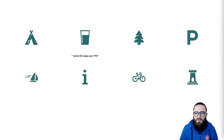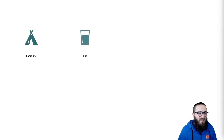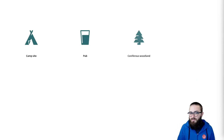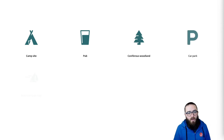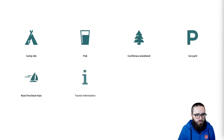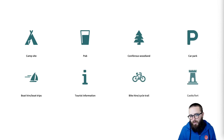Let's give you the answer straight away. So that's a campsite, a pub, a coniferous woodland, a car park, boat hire, boat trips, tourist information, bike hire, cycle trail, and a castle or fort.